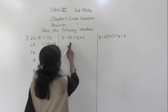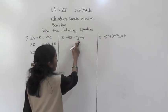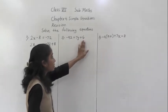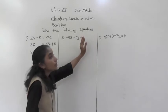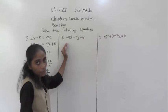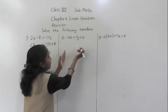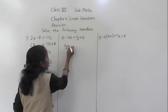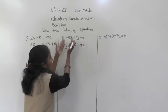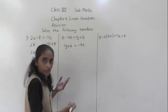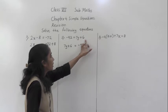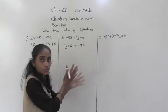Now next example: minus 92 is equal to 7y plus 6. Now if you observe this example, 7y plus 6 is on the right hand side. Either we can transfer plus 6 to the right hand side and it will become minus, or we can change the sides — writing it as 7y plus 6 is equal to minus 92. We can arrange it this way also.